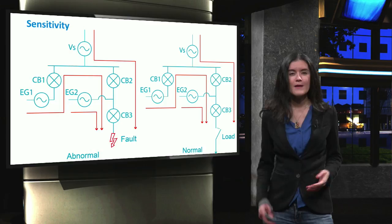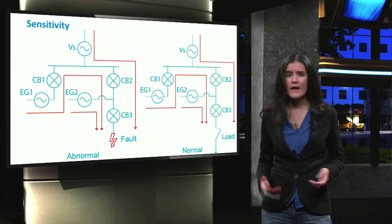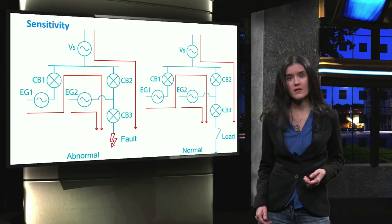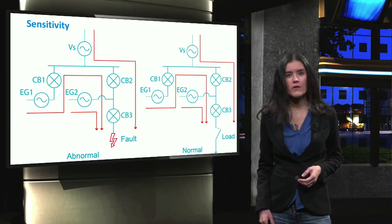Since we don't want the circuit breaker indicated with CB in the drawing to react when the system is in normal conditions, we need to make sure that the protection devices implemented in the network will respond only when a predetermined level of fault current is reached. Too sensitive circuit breakers might trip unexpectedly, causing unnecessary power interruption.